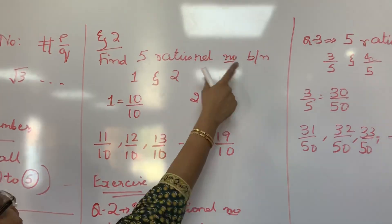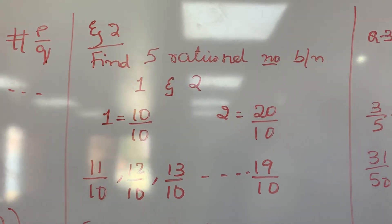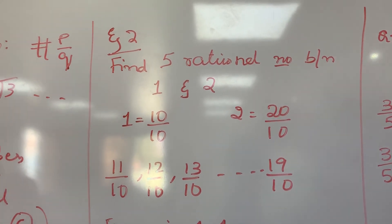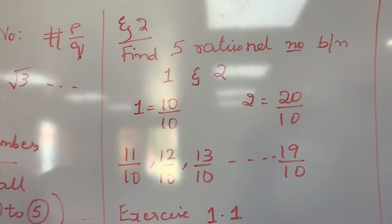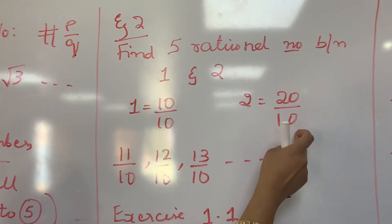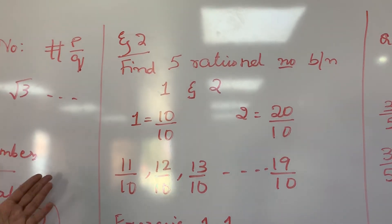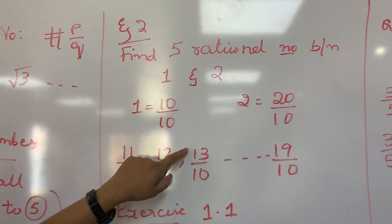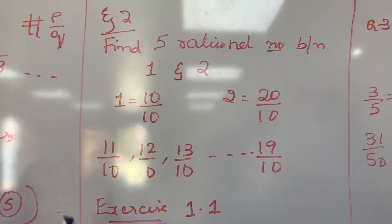Find 5 rational numbers between 1 and 2. Let us do in a very easier way. In textbook it is given in a different way. Now write 1 as 10 by 10 and write 2 as 20 by 10. Now between this you can write many rational numbers, not only 5. See, we can write as 11 by 10, 12 by 10, 13 by 10, up to 19 by 10. This is a very easier way of solving.